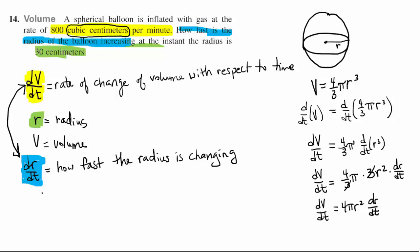We're being asked to find how fast is the radius increasing. So we're trying to find dr/dt equals we don't know what, and we are given that dV/dt is 800 and r is 30.